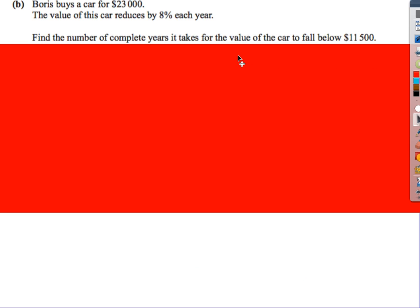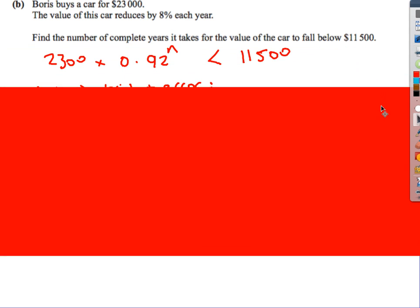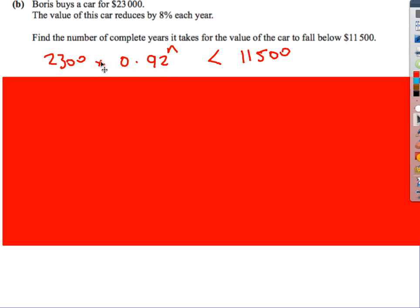Now, this one's from the 0607 paper. They like this question in that exam. They don't ask it as often in 0580, but they definitely could. We buy a car for $23,000. Reduce by 8% each year. As before, we start with 100%, take away 8%, we're down to 92%.